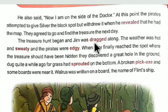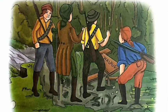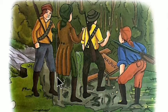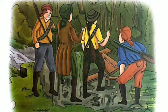The treasure hunt began and Jim was dragged along. The weather was hot and sweaty and the pirates were edgy. When they finally reached the spot where the treasure should have been hidden, they discovered a great hole in the ground, dug quite a while ago — grass had already sprouted on the bottom. Someone had already stolen the treasure. They also found a broken axe and a board with the word 'Walrus' written on it — the name of Captain Flint's ship — indicating the treasure had been taken long ago.